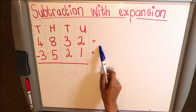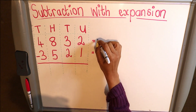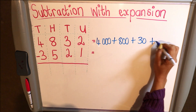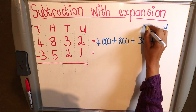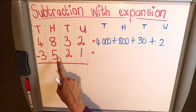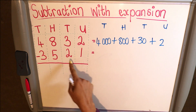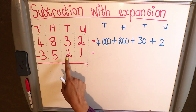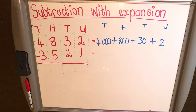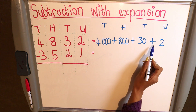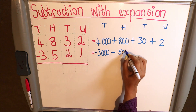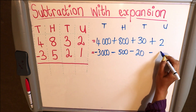The first thing we're going to do is expand each number. This four is in the place of the thousands, so this will be four thousand, plus eight hundred, plus thirty, plus two — and they're in their columns of units, tens, hundreds, and thousands. What I'm actually doing is saying minus three thousand five hundred and twenty-one, which means I'm subtracting three thousand, subtracting five hundred, subtracting twenty, and subtracting one.